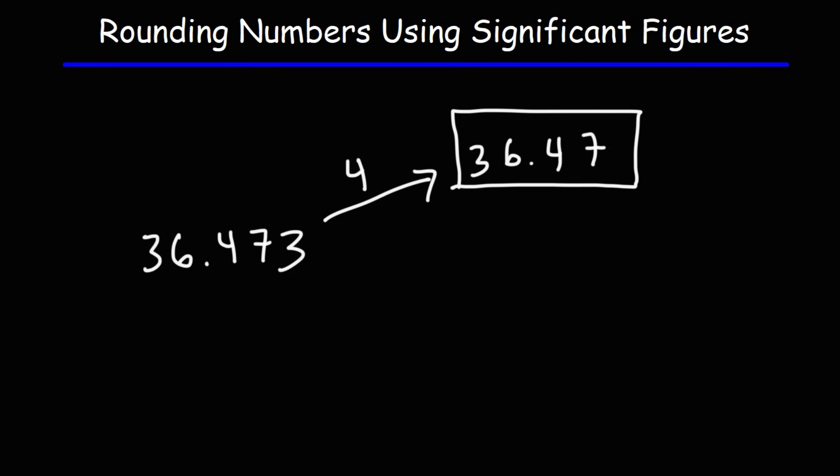Any non-zero number is considered a significant figure. Now, zeros — sometimes they're significant, sometimes they're not. For those of you who want to find out when a zero is significant or not, check out this video. If you go to the YouTube search bar, type in 'significant figures, a fast review, organic chemistry tutor.' That video will tell you how you can determine if a zero is significant or not. I'm also going to post the link in the description section below.